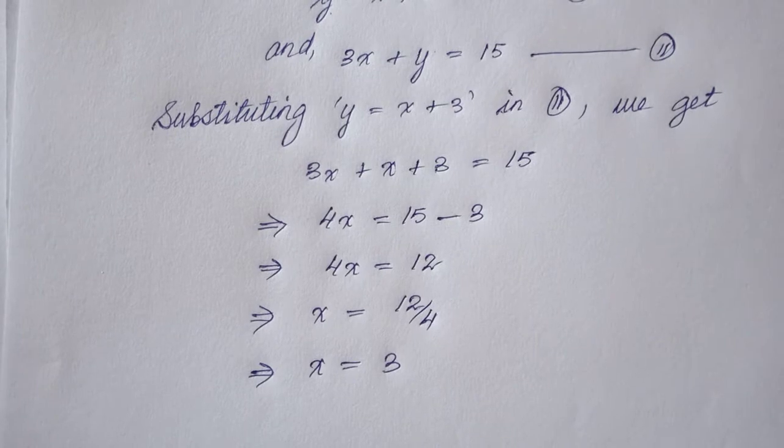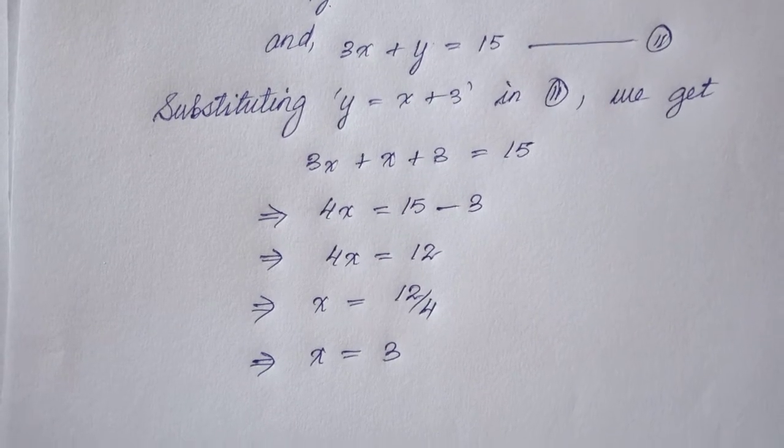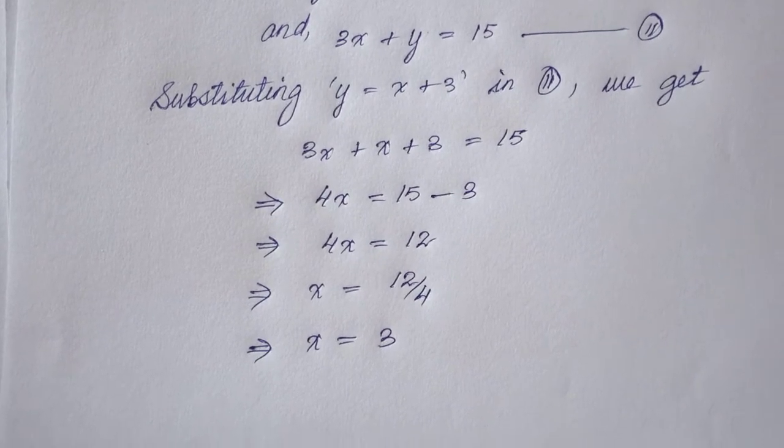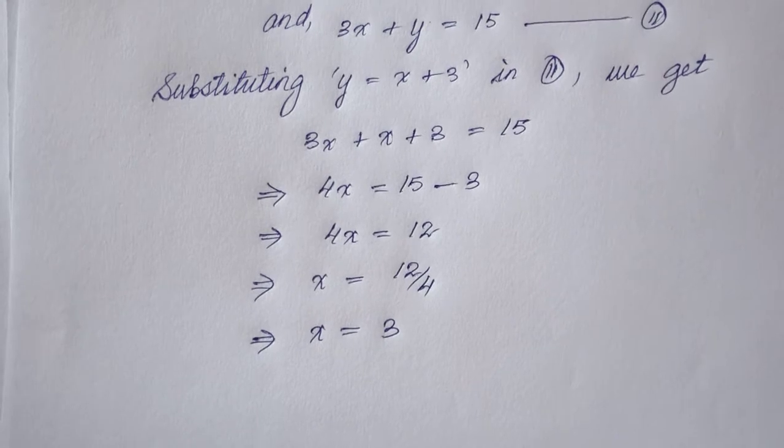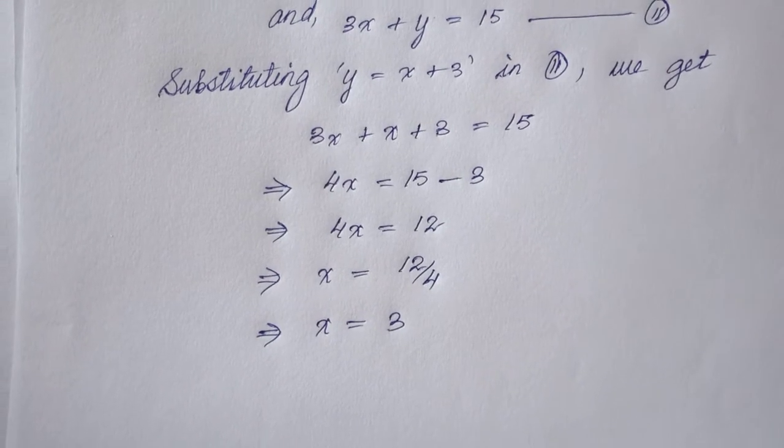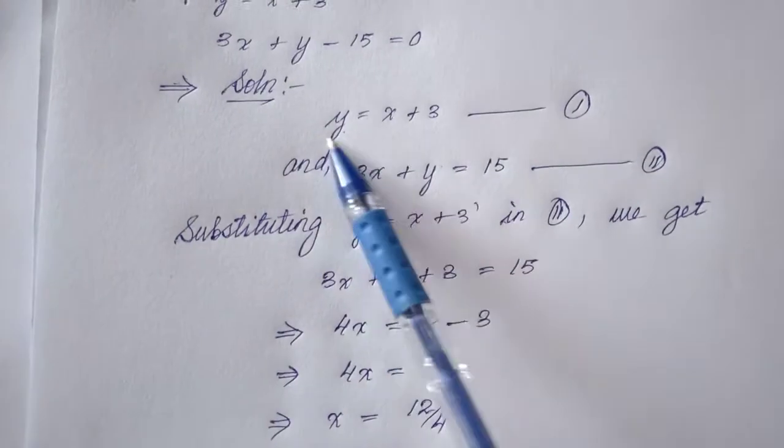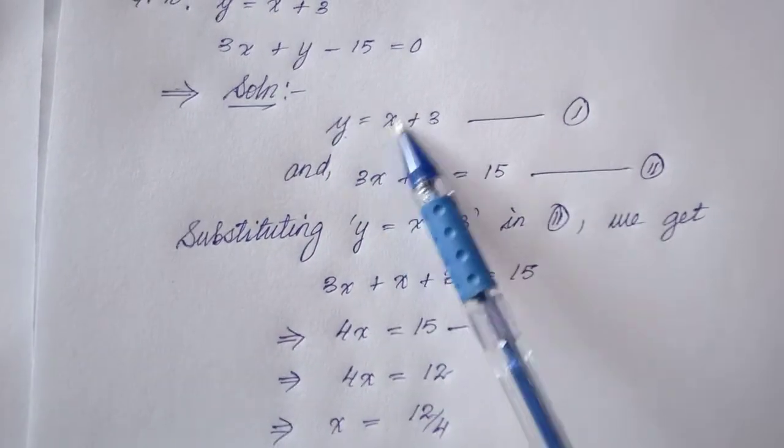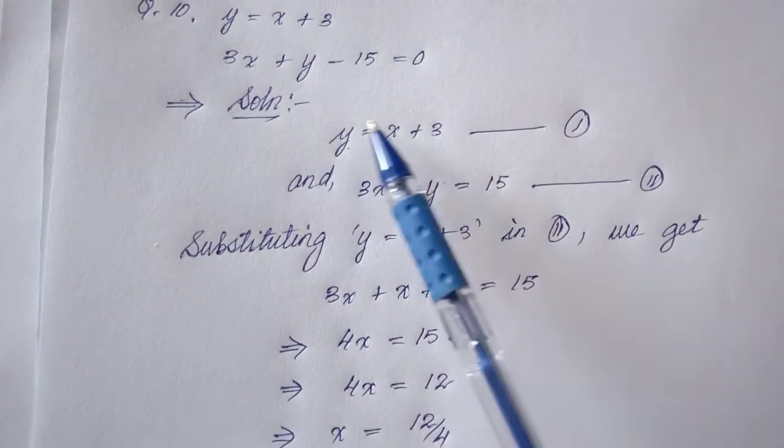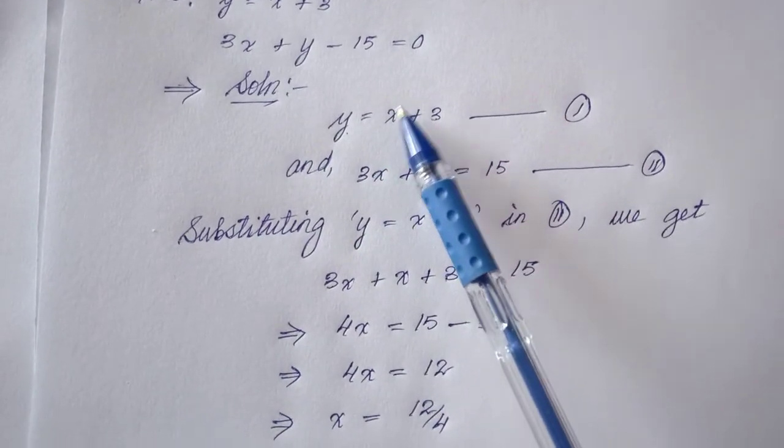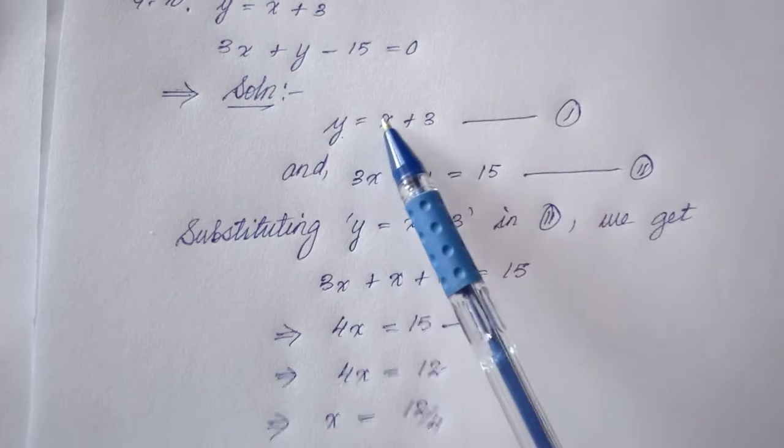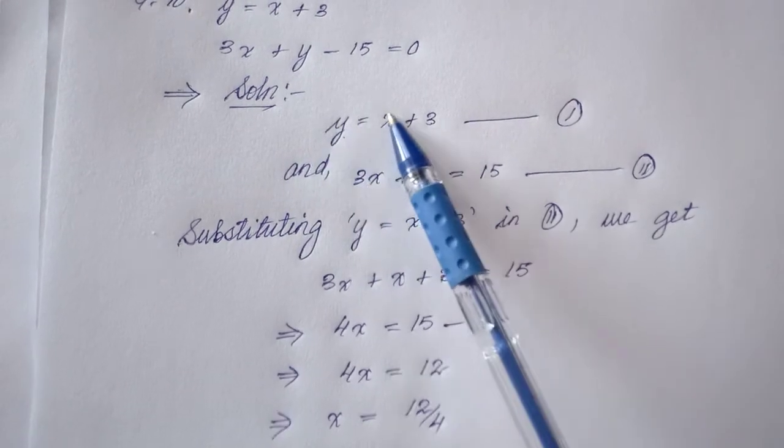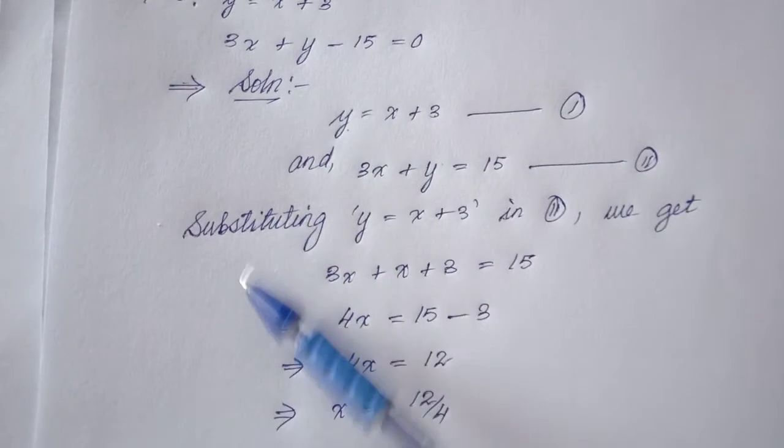You can use this type of method in question number 1, question number 2. You can use this type of method when the variable of x and y, or x or y, does not have any coefficient in front of it.